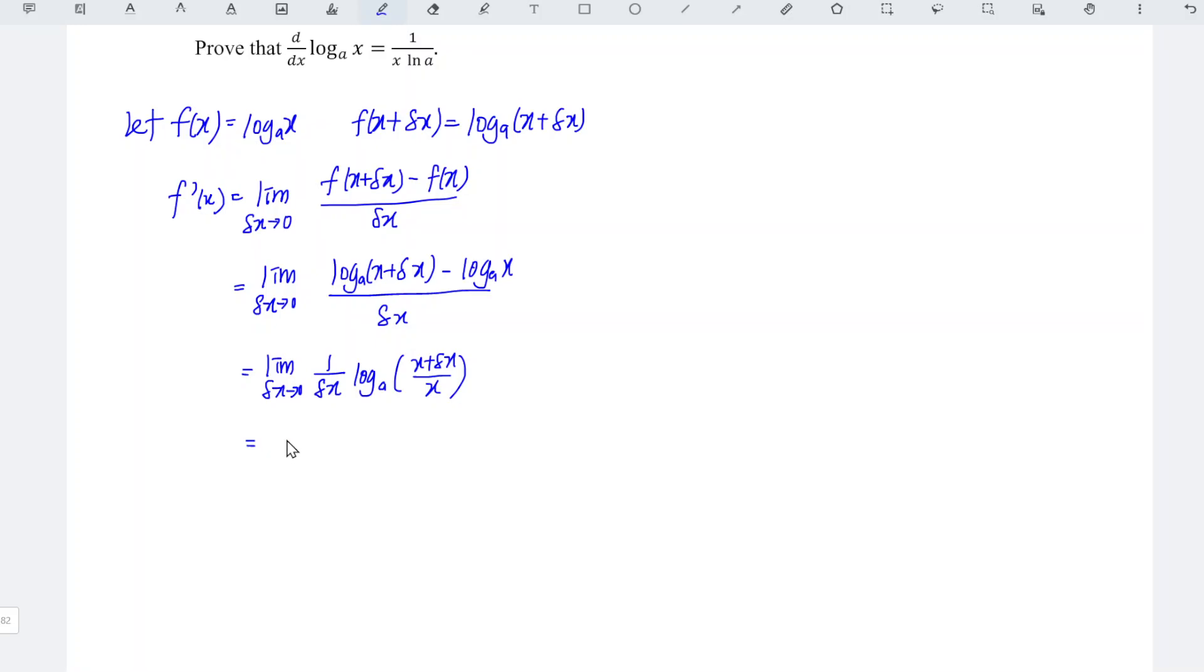Again, we can apply the power law of logarithm, bring this to the power. So we have log to the base a, simplify this, x over x is 1 plus delta x over x to the power of 1 over delta x.